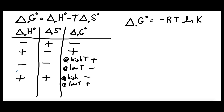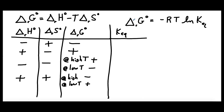So let's explicitly add a column for K, the equilibrium constant, which is related to delta G standard. If we have a positive delta G standard, that means K is less than 1 — the log of something less than 1 is negative, and a negative times a negative gives a positive delta G standard. On the other hand, if K is greater than 1, that logarithm is positive, and a positive times a negative gives a negative delta G standard. So for positive delta G standard values K is less than 1, and for negative delta G standard values K is greater than 1. For the first two scenarios, K is either always greater than 1 or always less than 1.